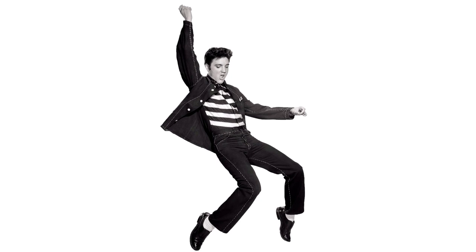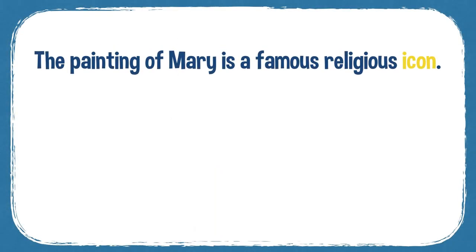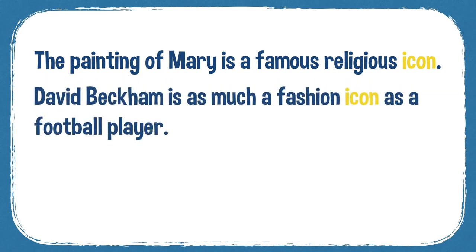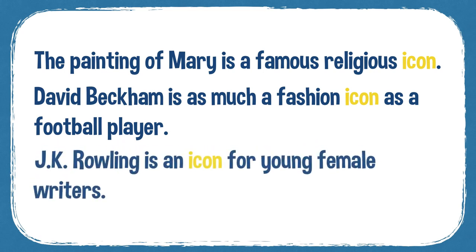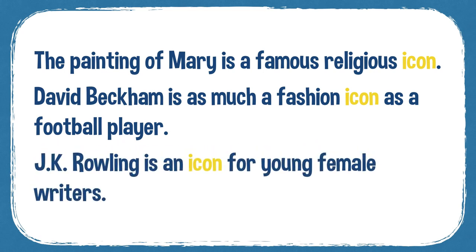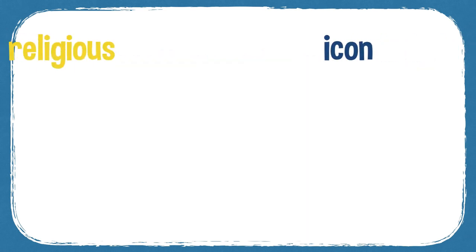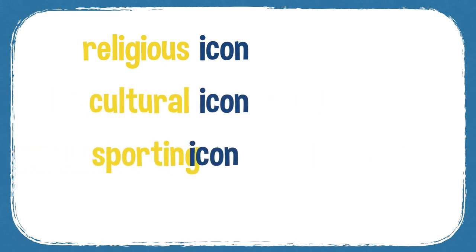The next word is icon — pronounced with an 'I' at the start: icon. An icon is a symbol. It can be an object or even a person — something that symbolises or represents an idea. Originally it's to do with religion, but it doesn't have to be. For example, Elvis Presley was a cultural icon — he represented the rock and roll era. 'The painting of Mary is a famous religious icon.' 'David Beckham was as much a fashion icon as a football player.' 'J.K. Rowling is an icon for young female writers.' We often say religious icon, cultural icon, or sporting icon.